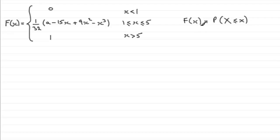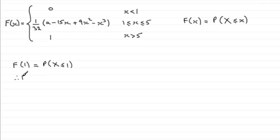If we took the lower limit 1, we would expect F(1) to equal the probability that X is less than or equal to 1. That probability is always going to be 0 when you go below the lower limit. So what we can do is substitute x=1 into the function, equate it to 0, and work out what 'a' is.